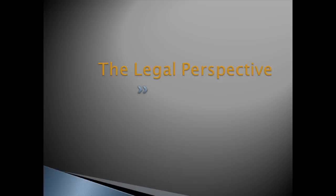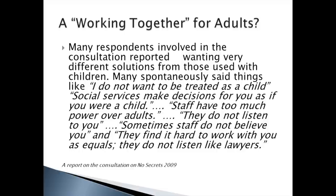We'll now look at the legal perspective. Working Together for Adults was a consultation report on the No Secrets document in 2009. Many respondents wanted very different solutions from those used with children. Many said things like: 'I do not want to be treated as a child,' 'Social services make decisions for you as if you were a child,' 'Staff have too much power over adults,' 'They don't listen to you,' 'Some staff do not believe you.'